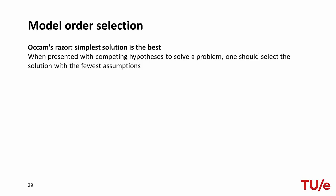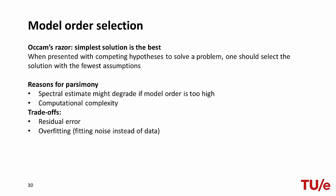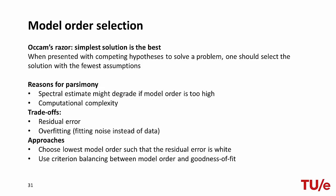A general guiding principle for model order selection is Occam's razor, which simply states that the simplest solution is oftentimes the best. There are multiple reasons to keep the model order as low as possible, including computational complexity and reliable spectral estimates. The trade-off we face is between model error and overfitting, which occurs when the model fits the noise instead of the data. Approaches include choosing the lowest model order for which the error is still white noise, or using a criterion that balances the number of parameters against the goodness of fit.